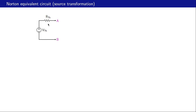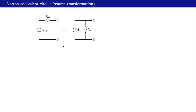We have seen that a linear circuit can be represented by its Thevenin equivalent — a voltage source v-th in series with resistance r-th. Equivalently, we can represent the same circuit with the Norton equivalent circuit, which consists of a current source i-n in parallel with resistance r-n. For these two circuits to be equivalent, there must be some relationship between v-th, r-th, i-n, and r-n.